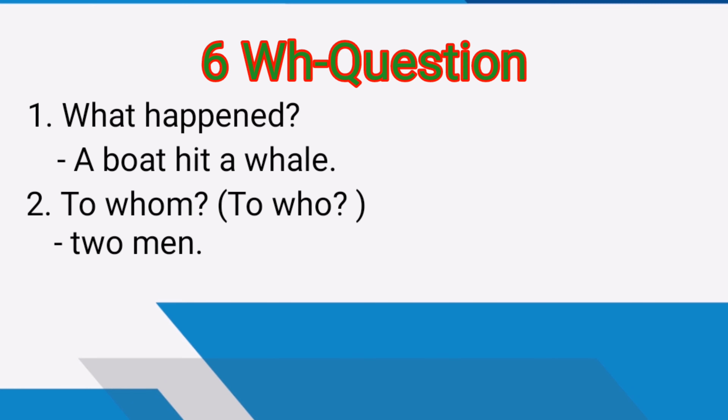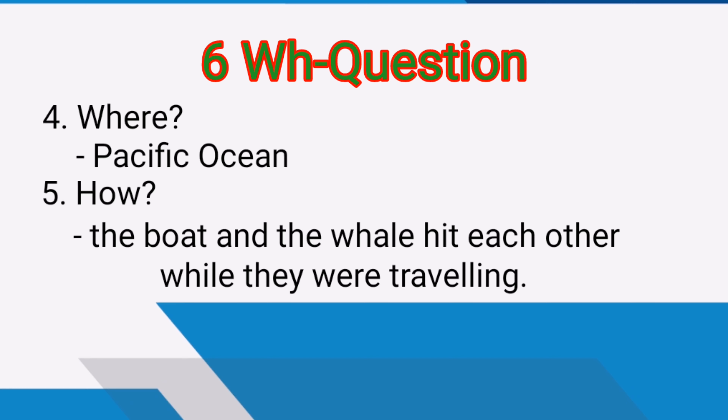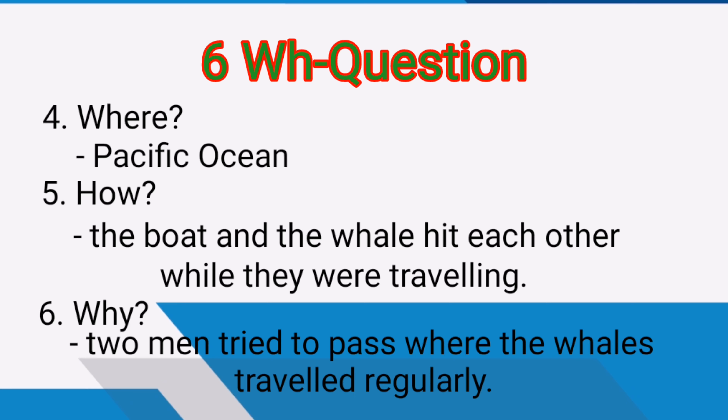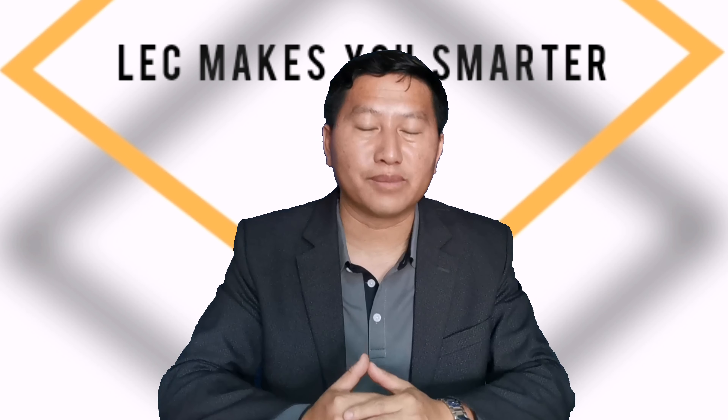Where? The Pacific Ocean. How? The boat and the whale hit each other while they were traveling. Why? The boat and the whale hit each other while they were traveling through the whale's regular path. This is how you get the key information from your reading.